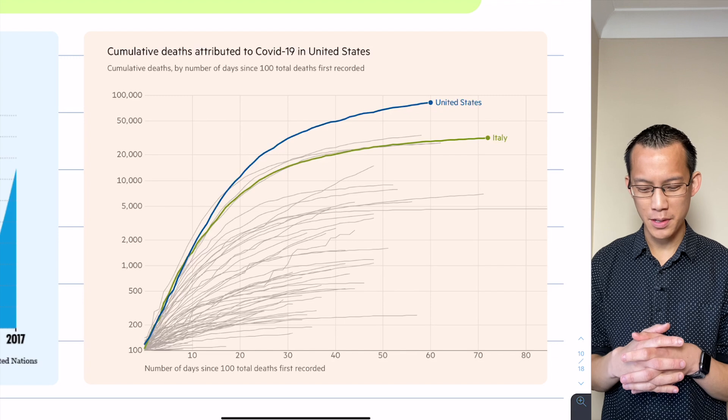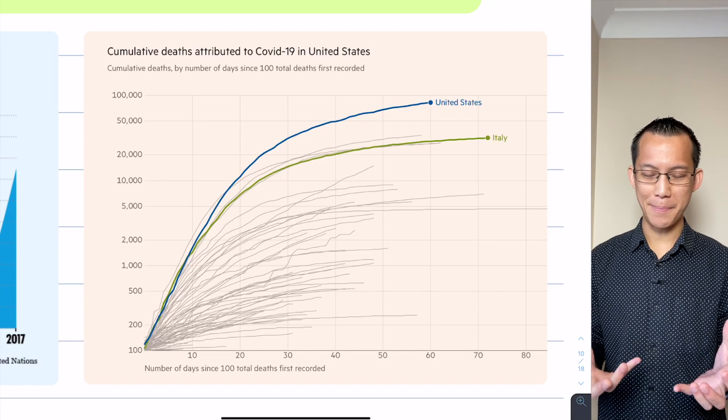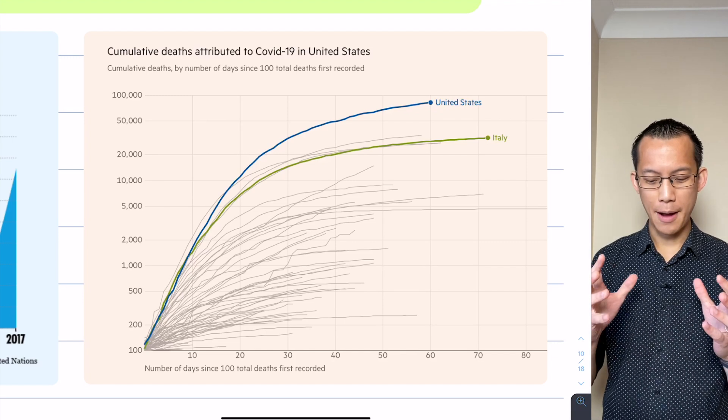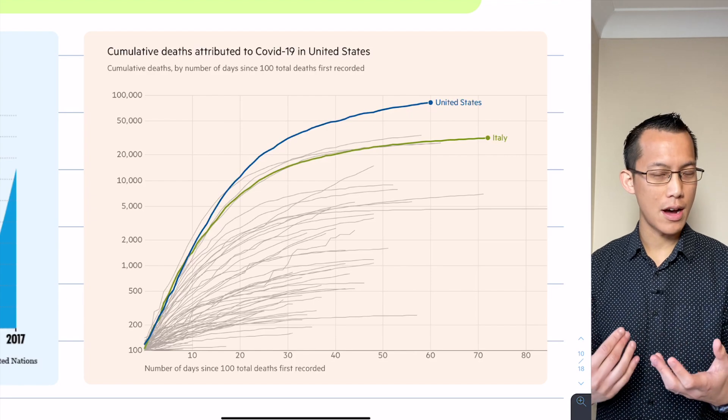As the numbers have increased things have slowed down, which is what you would hope would happen if there was an appropriate response. That's the characteristic shape of a logarithmic curve - the larger the value is the slower that it grows.